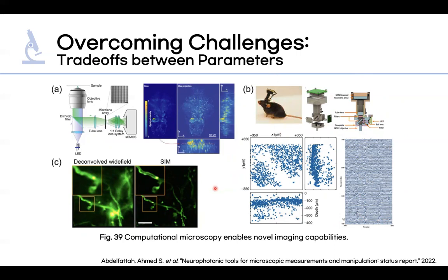Structured illumination microscopy, or SIM, has enabled super-resolution reconstruction and background suppression for in vivo brain imaging. This is shown in figure C. With SIM, you can see that the background was suppressed and that the resolution was enhanced.